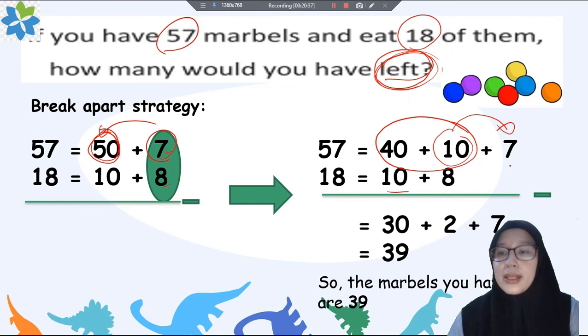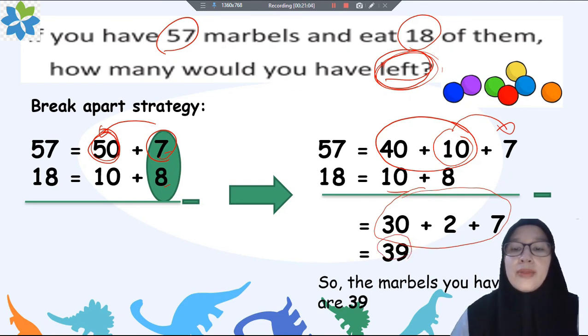How can we count it? 17 minus 8 equals... let me see, 10 minus 8 equals 2. And then 40 minus 10 equals 30. And then please add together all of the numbers and the result is 39. So the marbles you have now are 39.